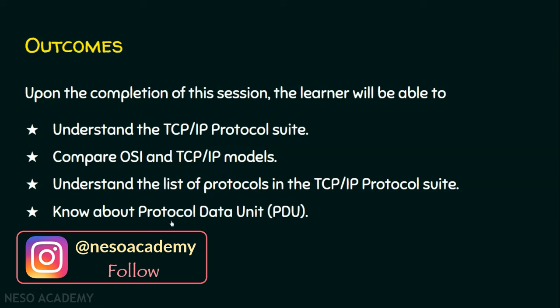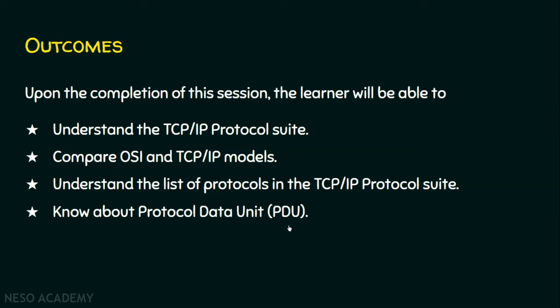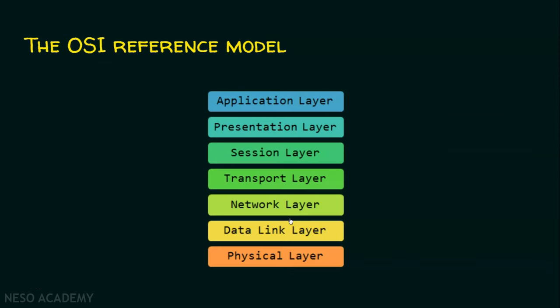We will now see what layers are available in the OSI reference model. In the OSI reference model, we have seven layers: application layer, presentation layer, session layer, transport layer, network layer, data link layer, and physical layer. Now we will see how many layers are there in the TCP/IP model by comparison with the OSI reference model.